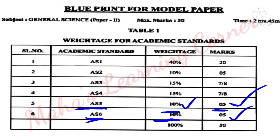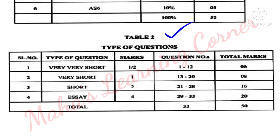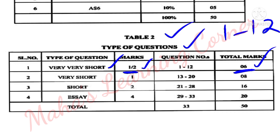Total is 50 marks. Table 2 shows the type of questions: there are four types. Very very short answer type questions carry half a mark each. Questions 1 to 12 cover these, totalling 6 marks.